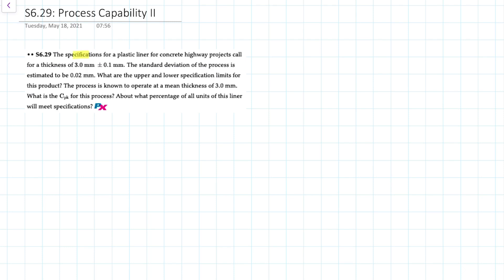Here's our data. We have the specifications for a plastic liner for a concrete highway project that calls for a thickness of 3 millimeters plus or minus 0.1 millimeters. The standard deviation of the process is estimated to be 0.02 millimeters.